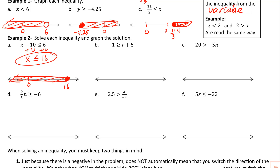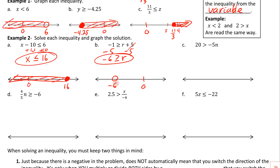Next one: get r by itself by subtracting 5. Subtracting does not change the direction of the inequality, so we leave it as is. We get r on this side and negative 6 on the other. Circle that, put 0 and negative 6 on the number line, close it in since it has the equal sign, and reading from the variable r is less than or equal to negative 6 — shade to the left.